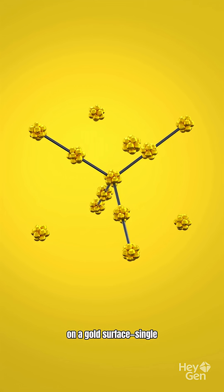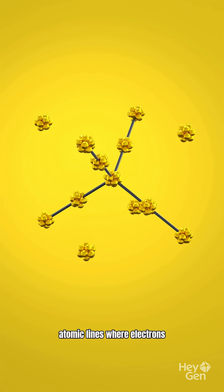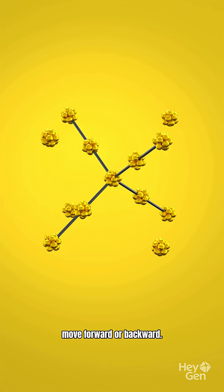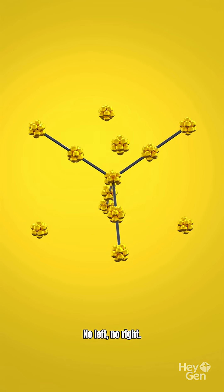They created phosphorus chains on a gold surface, single atomic lines where electrons move forward or backward. No left, no right.